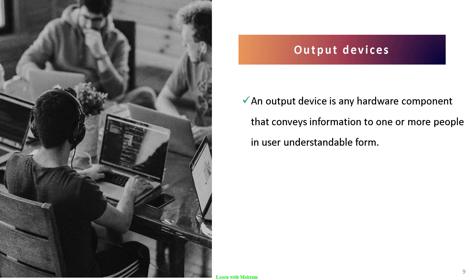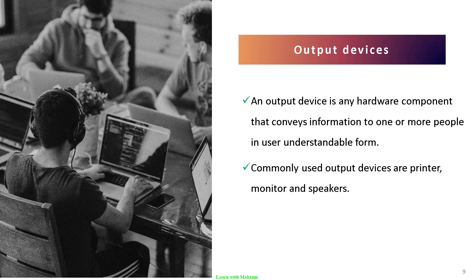An output device is any hardware component that conveys information to one or more people in a user-understandable form. Data given to the computer is converted into binary form, and after processing the result is still in binary form. After processing, the result is converted into a user-understandable form and displayed using devices like a printer, monitor, or speakers.